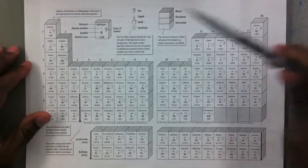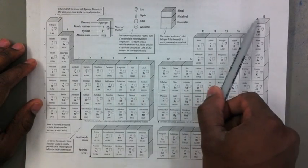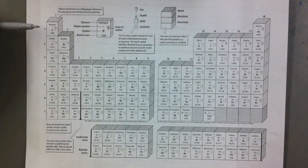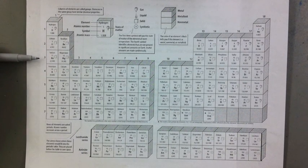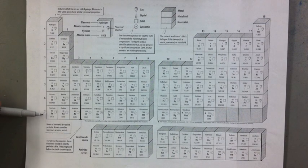The periods are the horizontal rows. Horizontal means moving straight across from left to right. In this case, you will see that there are seven periods on the periodic table. One, two, three, four, five, six, and seven.